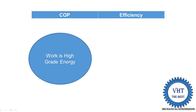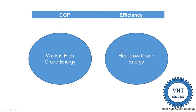Work energy is completely converted into heat energy according to thermodynamic law. So if we find out the efficiency for a refrigeration system, the answer would be more than 100%, which is not acceptable since the efficiency of any device cannot exceed 100%. That is why we do not find out efficiency for refrigeration and air conditioning systems.